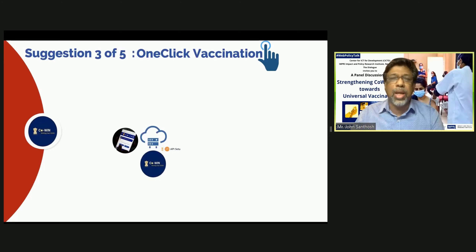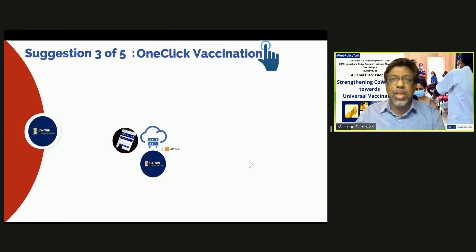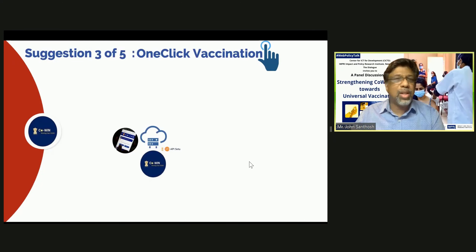If you look at the building blocks: one is the server component, then the API part of it, and the third one is the front end — or what you and I will connect to — which is the app or the web page.